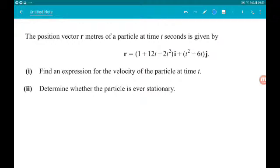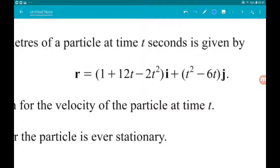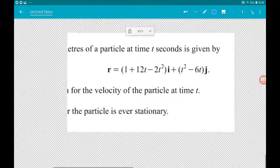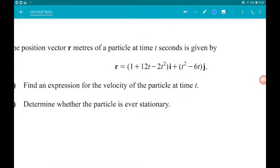The position vector r meters of a particle at time t seconds is given by r equals 1 plus 12t minus 2t squared i plus t squared minus 6t j. Part 1 asks to find an expression for the velocity of the particle at time t.